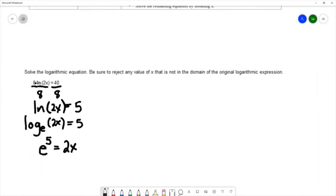Now that we've converted to an exponential equation, we'll solve for the variable x by dividing both sides by 2. So we have x equals e to the 5th over 2. Then we need to make sure we check.